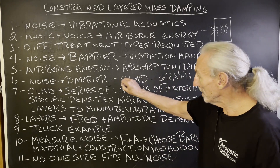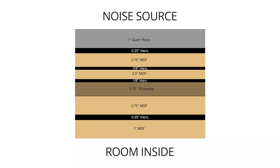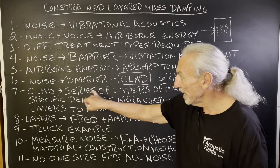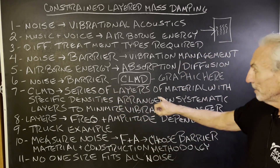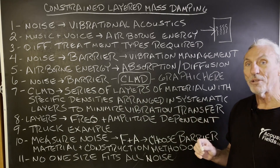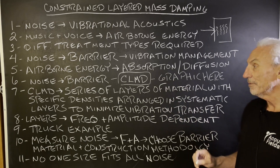For barriers, we use a technique called constrained layer mass damping. Look at the graphic here — you can see this is one of our 40-plus types of barriers that we design, depending on the frequency and amplitude of the noise. You can see a series of layers with different material types, different densities, different construction methodologies, and different orientation in the room. One side faces the noise, one side faces the room. Constrained layer mass damping is a series of layers of materials with specific densities arranged in a systematic order to deal with the frequency and amplitude of the noise.